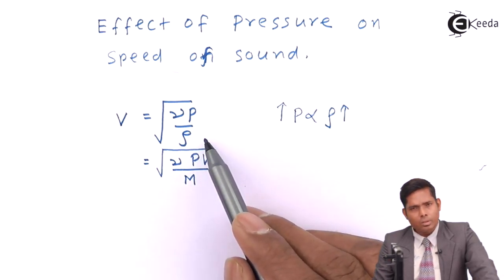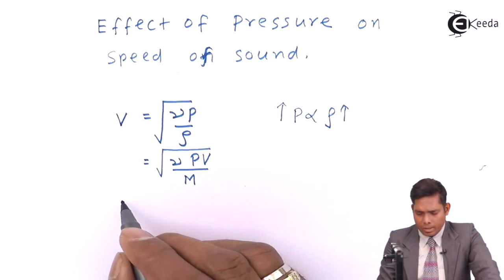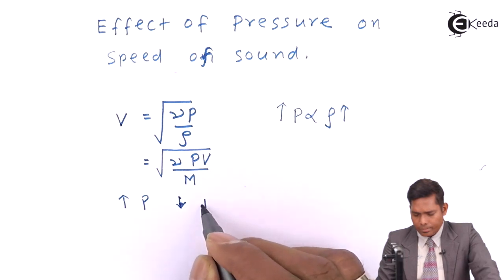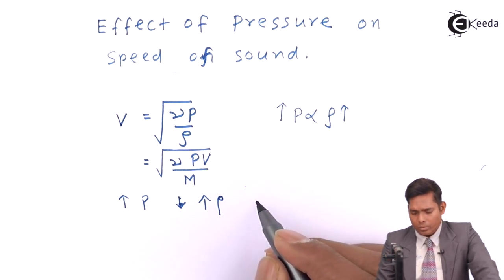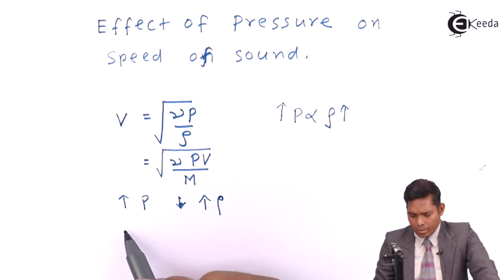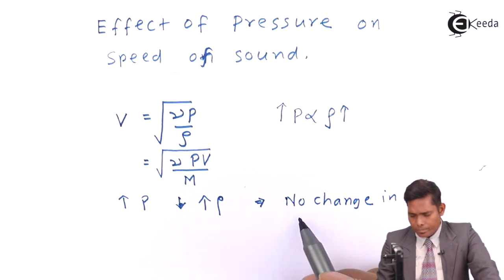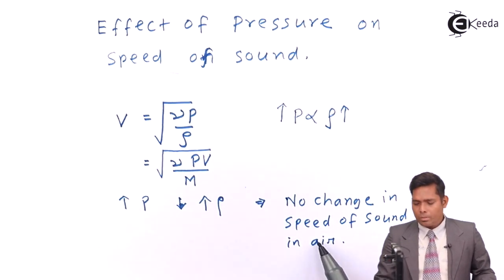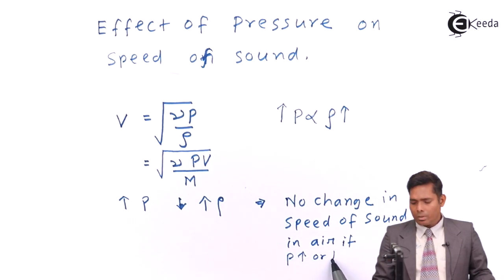So if pressure is two times, then density is also doubled, so it will cancel out and velocity will remain the same. Increase in pressure is followed by increase in density by the same amount. This implies there is no change in the speed of sound in air if pressure is increased or decreased.